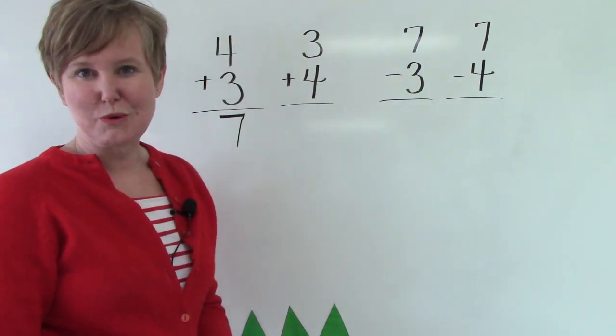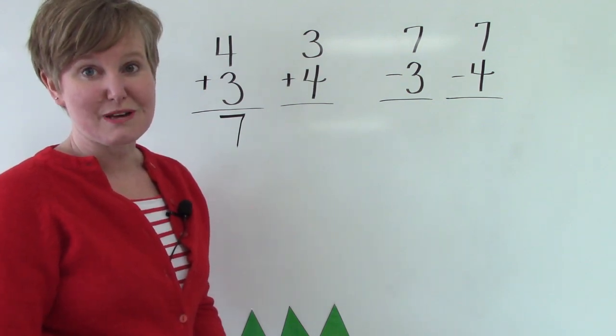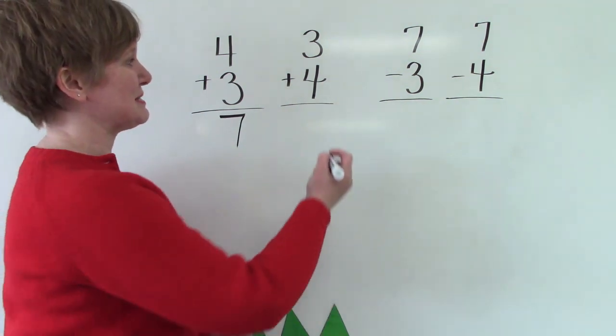This is really the same question. We've just put the numbers in a different order. 4 plus 3 equals 7. But 3 plus 4 equals 7 as well.